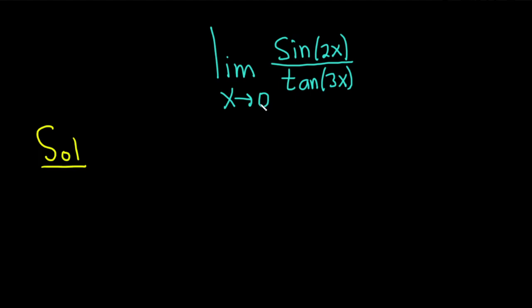First thing you should do whenever you have a limit is, at the very least mentally, take the number and plug it in. Let's actually go ahead and do it. If we put a 0 where the x is, we get sine of 2 times 0, which is the sine of 0.